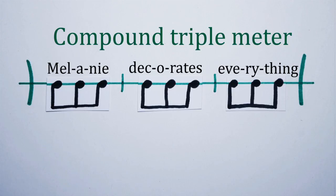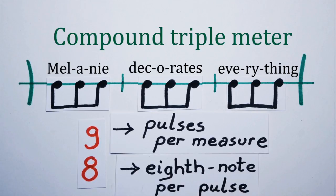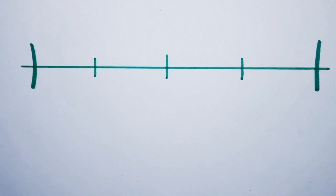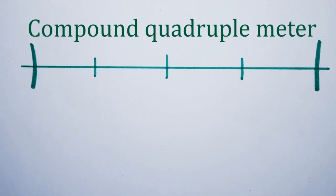The top figure of the time signature will be a nine and the bottom figure stays an eight for each eighth note given to each pulse. One step further and we have compound quadruple meter.